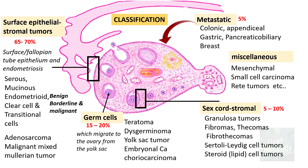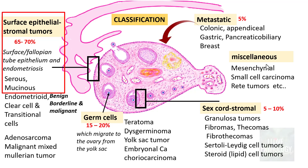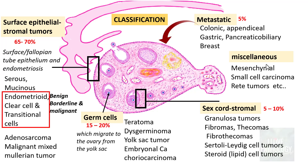If you remember the classification we learned in the last two sessions: ovarian tumors are classified into surface epithelial tumors, germ cell tumors, sex cord stromal tumors, metastatic tumors, and miscellaneous tumors. In the previous session I discussed serous and mucinous tumors. Today we will cover the other three — endometrioid tumors, clear cell tumors, and transitional cell tumors.